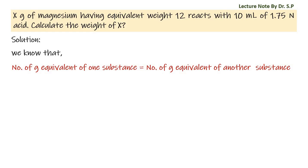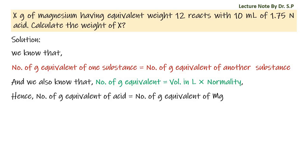And we also know that number of grams equivalent is equal to volume in liter into normality. Hence, number of grams equivalent of acid is equal to number of grams equivalent of magnesium.